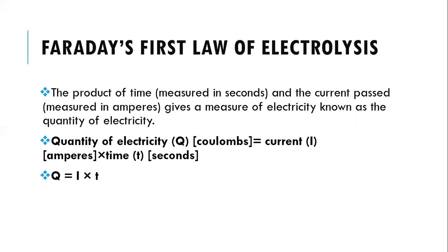Now let's look at the First Law of Electrolysis. We have to know that the product of time, measured in seconds, and the current, measured in amperes, gives a measure of electricity known as the quantity of electricity. The quantity of electricity can be expressed in coulombs as: Q equals current in amperes times time in seconds — abbreviated as Q = I × t.